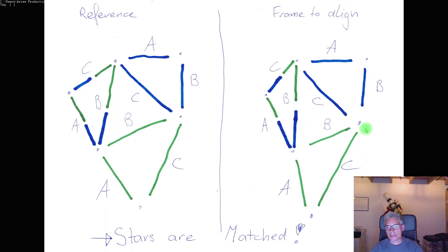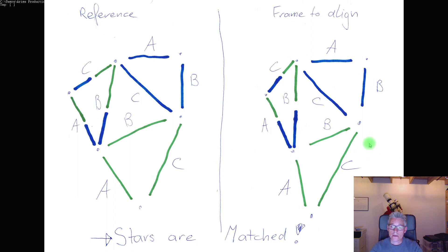The error margin is needed because of several factors. The frame to align will be shifted and rotated relative to the reference frame. As you can see here, the triangles don't exactly look the same. Also, the optics can be distorted — the optics are never perfect, and this can create distortions in the field of view which causes stars to be at a slightly different position.